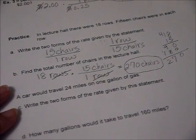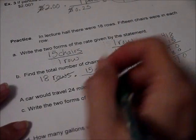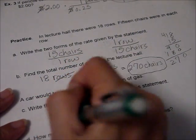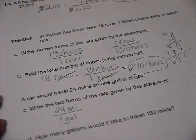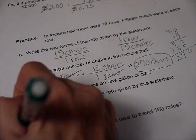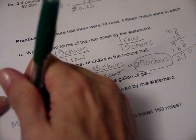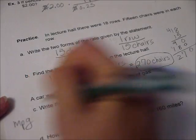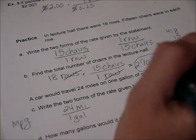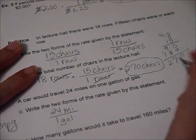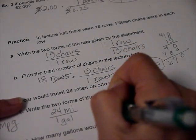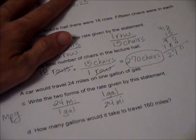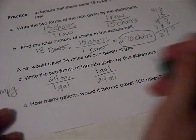All right, now, a car would travel 24 miles on one gallon of gas. Two forms: so 24 miles, one gallon. Now, sometimes you're going to see this, it's miles per gallon, that's what we're talking about here. How many miles can you go on a gallon of gas? So it's talking about the efficiency of your car. Or one gallon on top and 24 miles on the bottom.